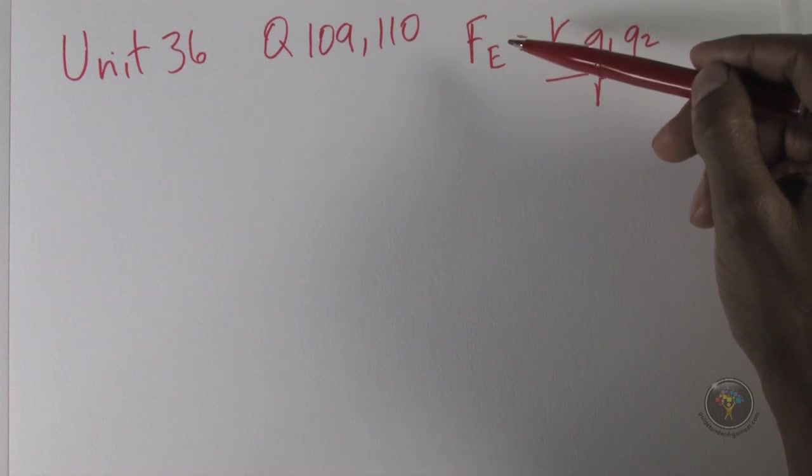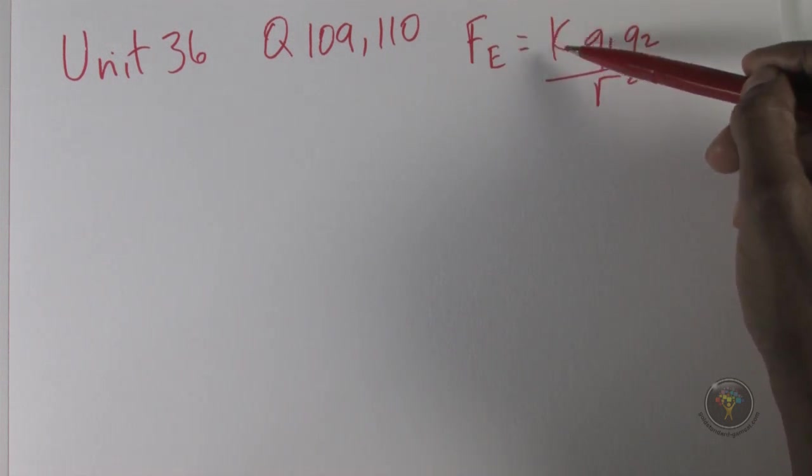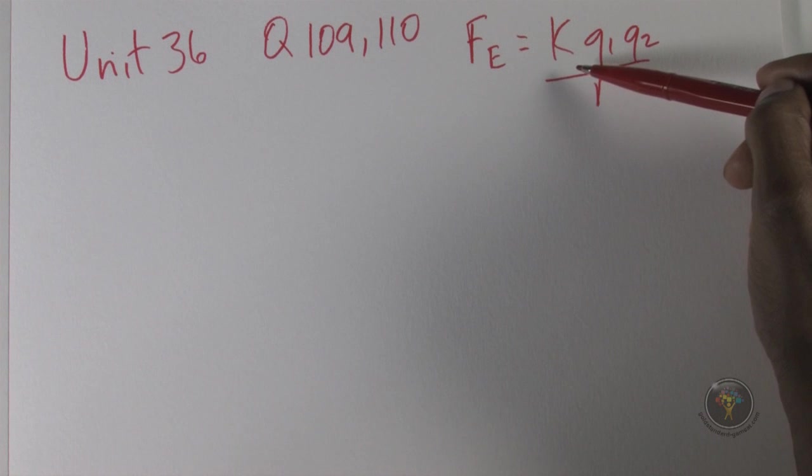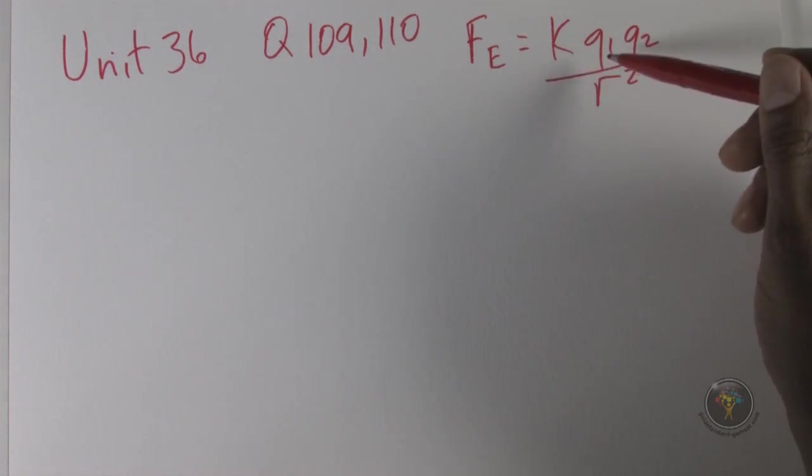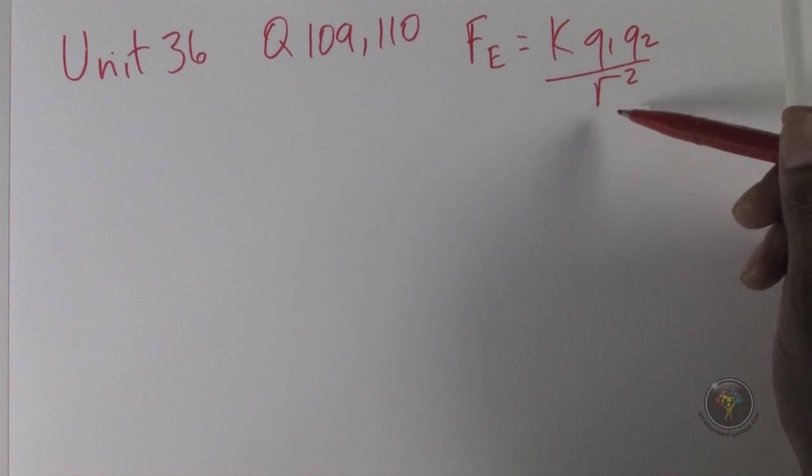But Coulomb's law, this is the electric force - we have the electric force equals k, Coulomb's constant, you don't have to memorize it, and q1 q2, the two charges involved, over r squared, where r is the distance between the two.